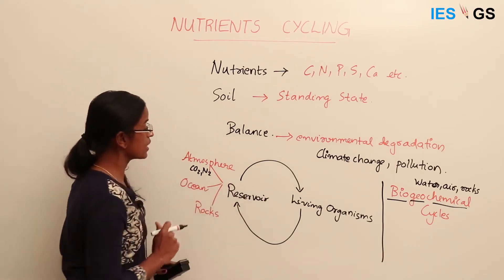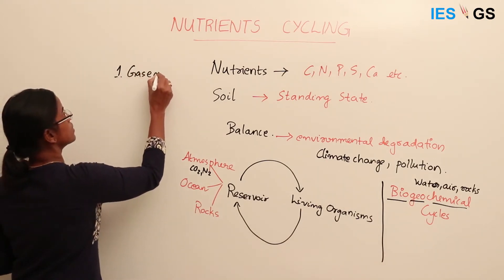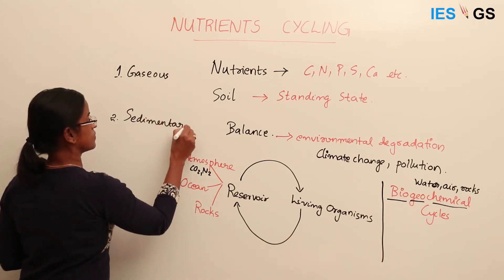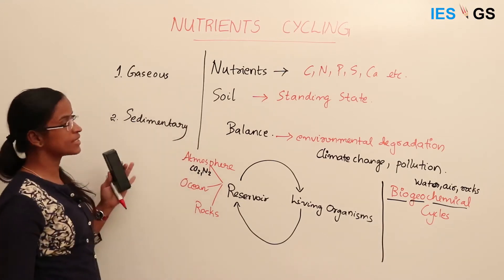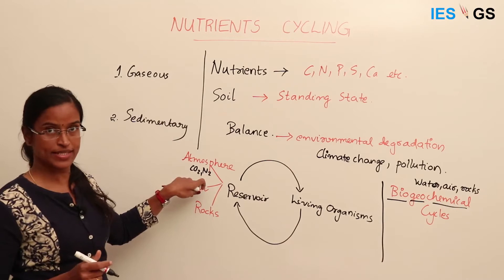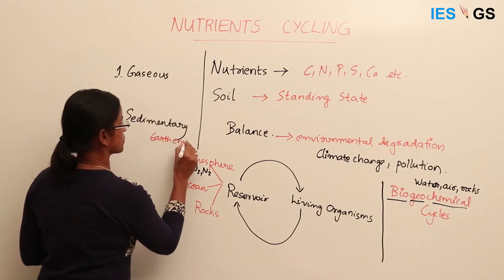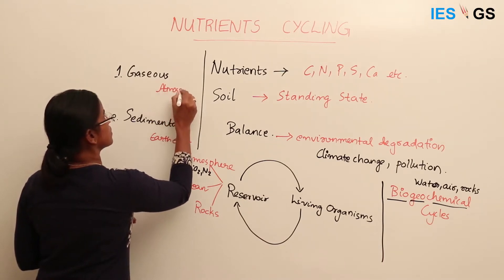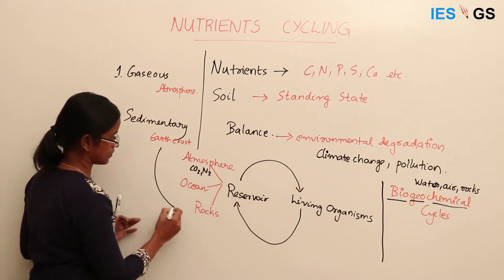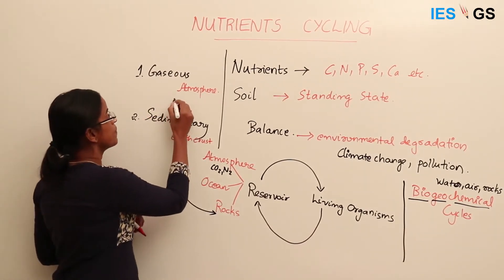Depending on the type of reservoir, there are two types of cycles: the first is the gaseous cycle and the second is the sedimentary cycle. In a gaseous cycle, the atmosphere is the main reservoir — the nutrients are present in the form of gas. In a sedimentary cycle, the earth's crust is the main reservoir, which is mainly rocks.